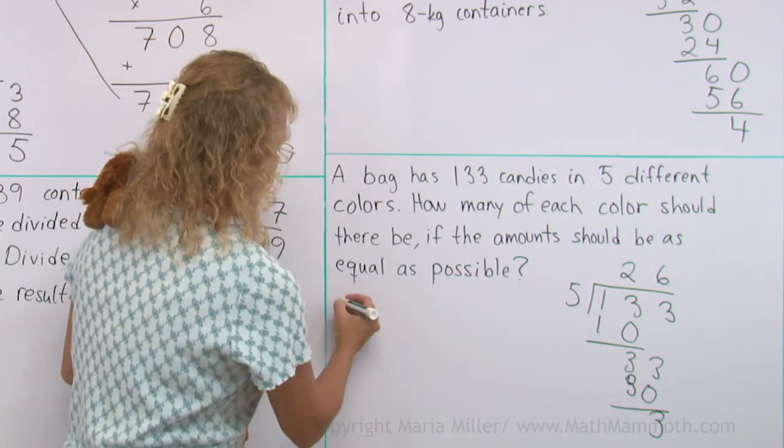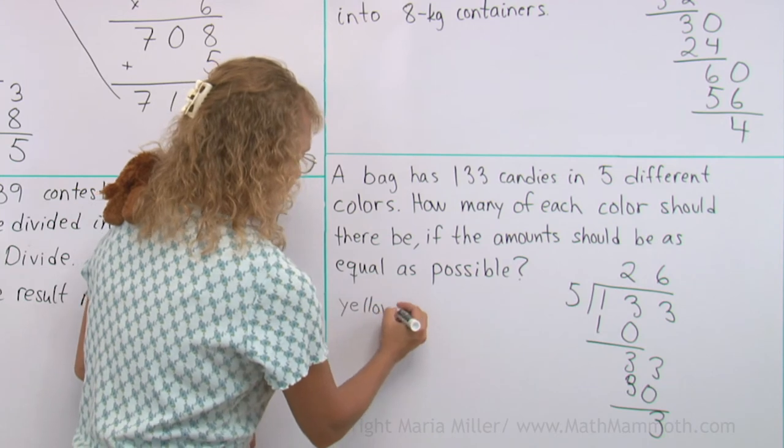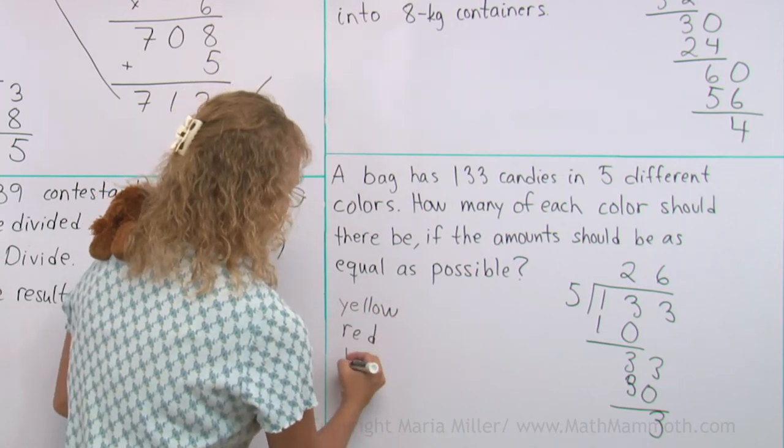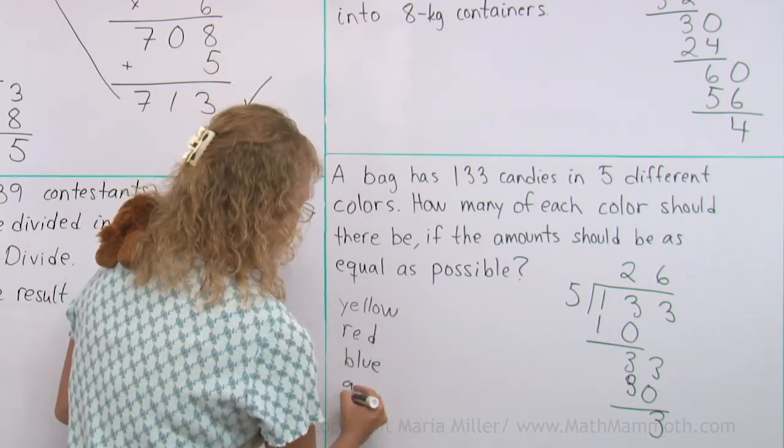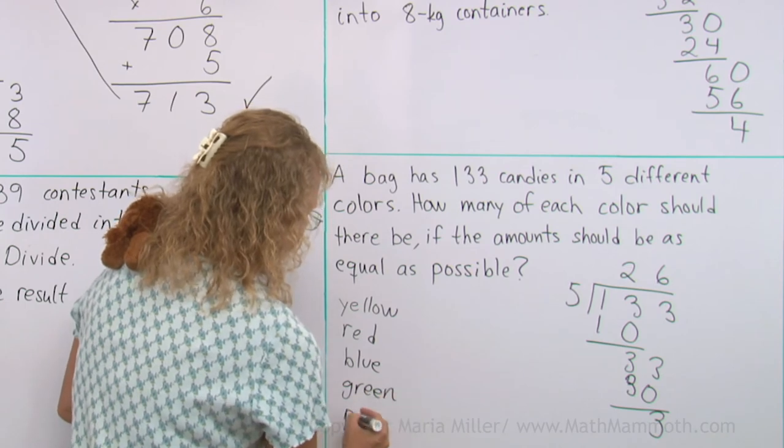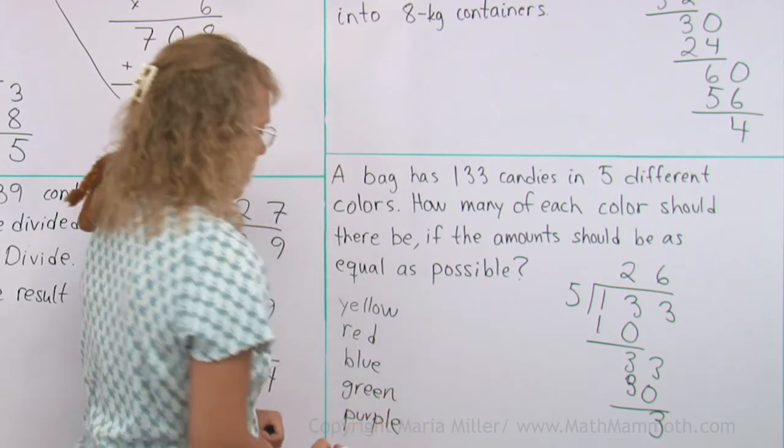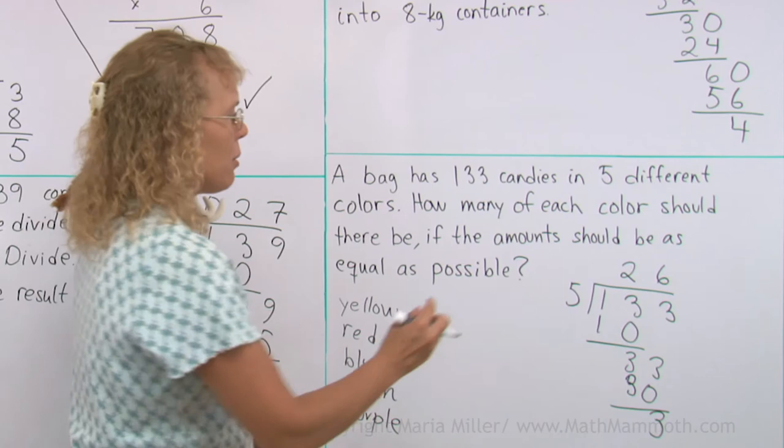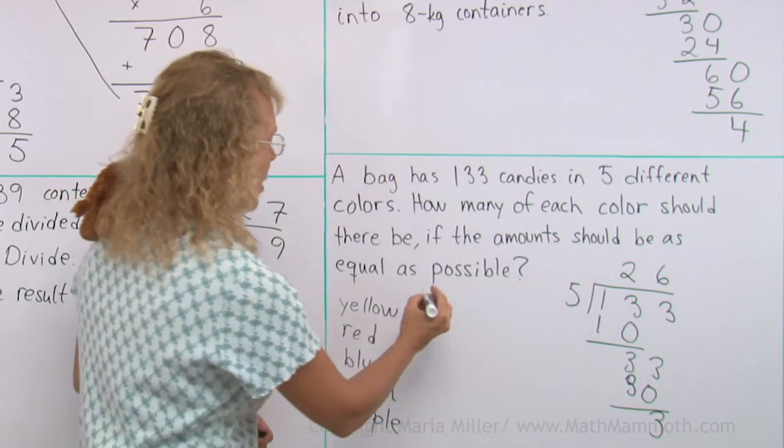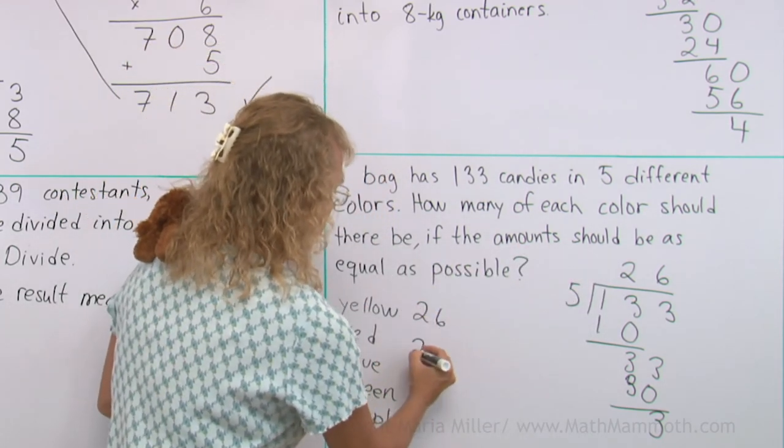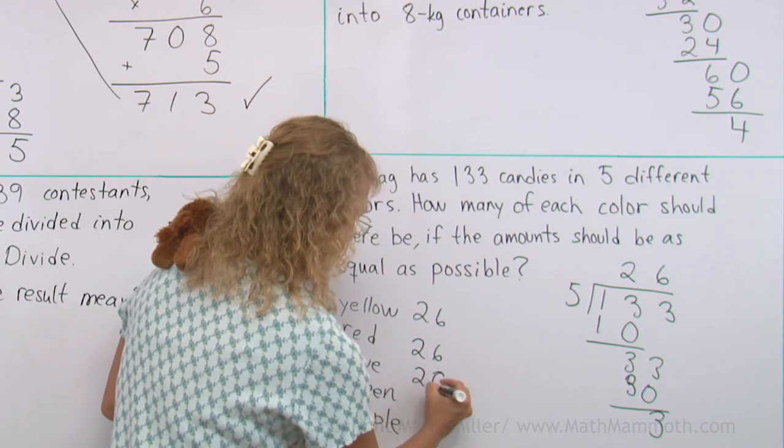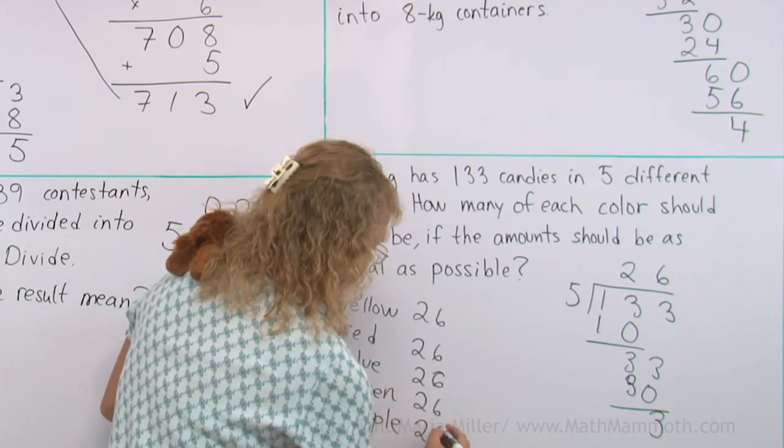Let's choose five colors. Yellow, red, blue, green and purple. So, this 26 would be that there would be 26 of each color if it went evenly. Like that.